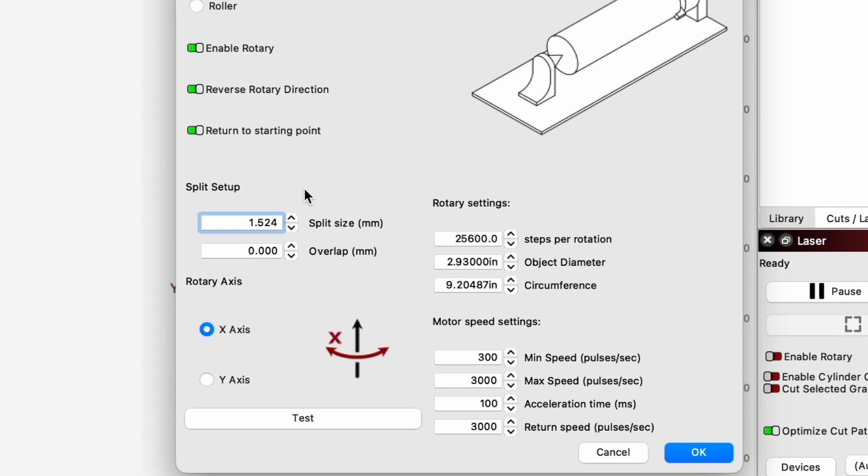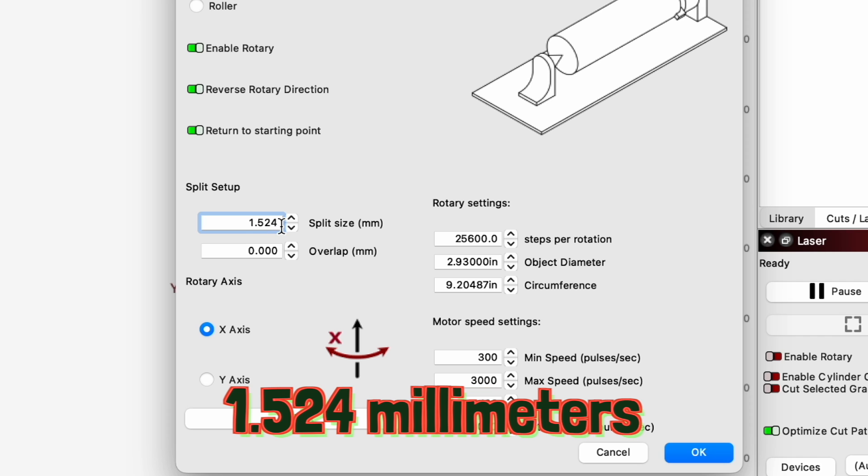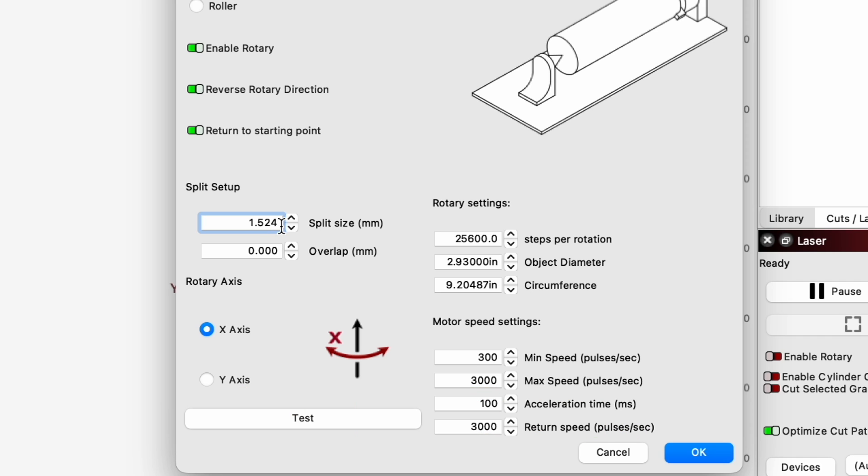So here's where some settings come up. This split setup will split up your design by whatever you set this to. So it will rotate the chuck, in this case, 1.524 millimeters, and then the galvo will get the design put on that, assuming it's a flat surface. And then it will rotate again, and then it will do that again. So ours is set up right here for default, and we'll just leave it like that for now. And then you can do some overlap if necessary. We're going to leave ours as zero.